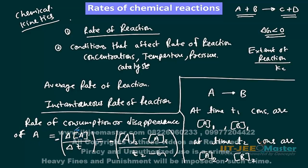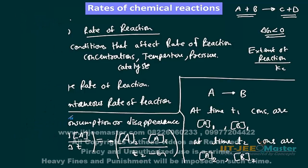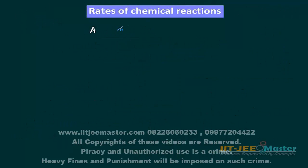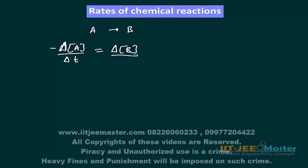Because there is the consumption of A, its concentration change will be negative, so we use a minus sign. The rate of consumption or disappearance of A will be the same as the rate of production of B. So the rate of disappearance of A is: minus delta[A] divided by delta T. And this value is equal to delta[B] divided by delta T, which is obviously equal to the rate of production of B, or the rate of appearance of B.